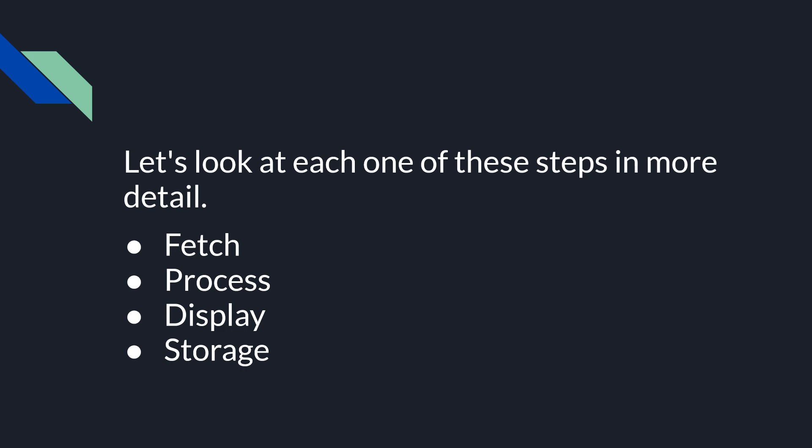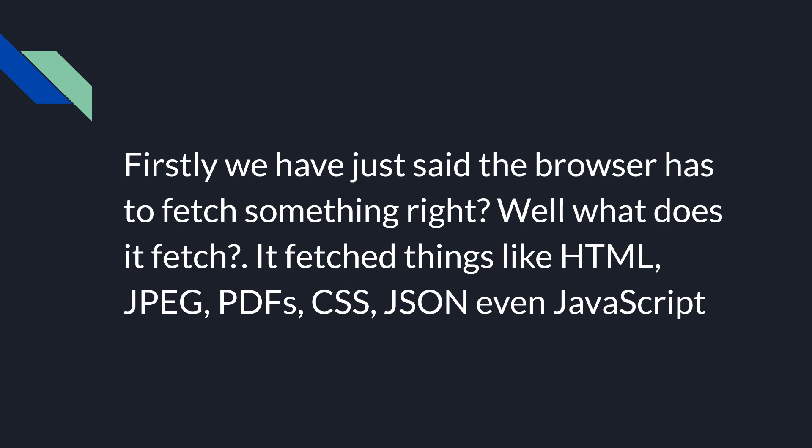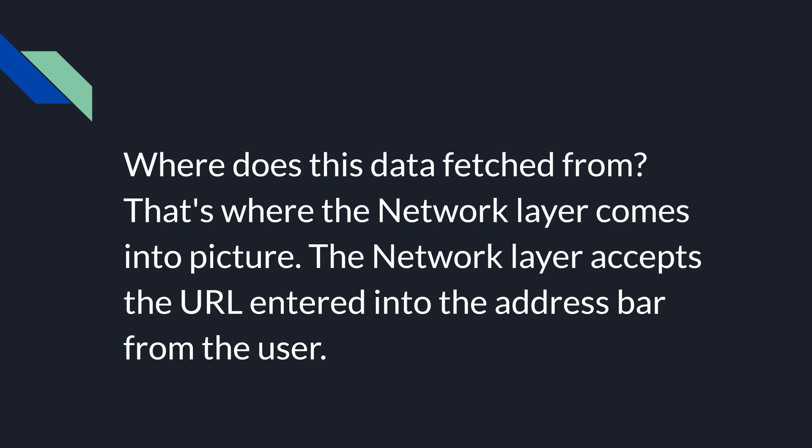Let's look at each of these steps in more detail. The four steps are fetching, processing, displaying, and storage. First, let's learn about fetching the data. What does the browser fetch? It fetches things like HTML, JPEG, PDF, CSS, JSON, and even JavaScript. These are all the different types of things which the browser can fetch from the network.